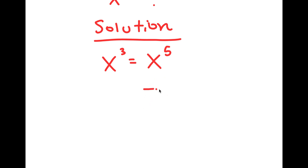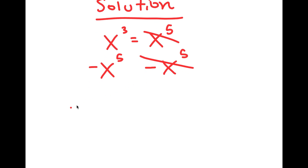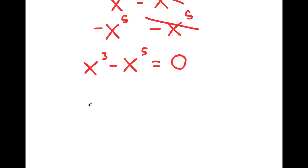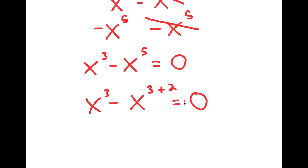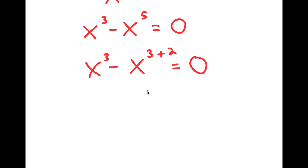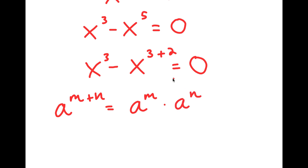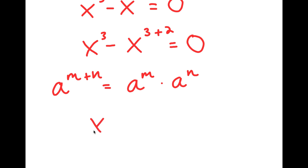What I'm first going to do is subtract x to the power of 5 on both sides. These two cancel out, and I get x to the power of 3 minus x to the power of 5 is equal to 0. Now, x to the power of 5 is the same thing as x to the power of 3 plus 2. An important property of exponents is that a to the power of m plus n equals a to the power of m times a to the power of n. So x to the power of 3 plus 2 equals x to the power of 3 times x to the power of 2.